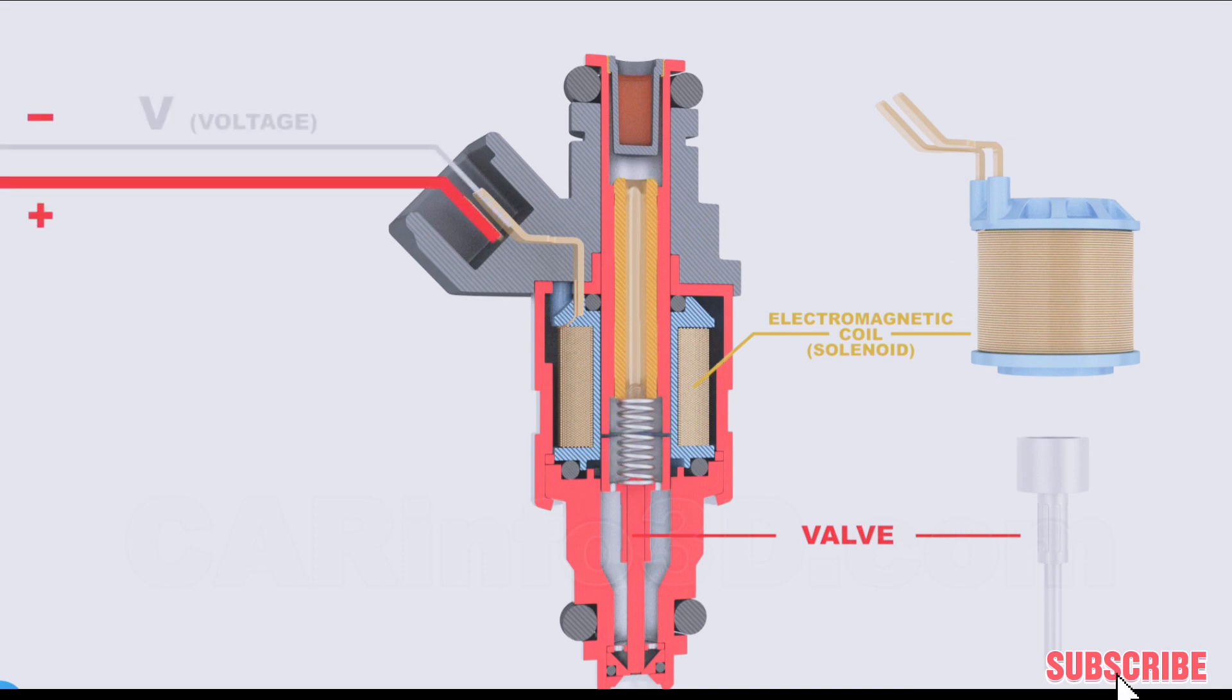When a voltage is applied to the electromagnetic coil, the valve opens. The magnetic field created by an electric current passing through the coil lifts the valve. When the voltage supply is cut off, the magnetic field disappears and the spring forces the valve to close.